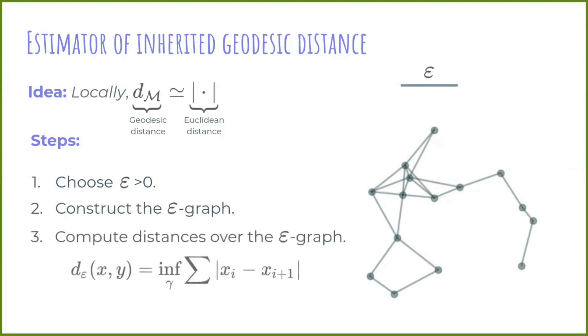Third, compute distances of the epsilon graph in the following way. Given two points x and y in the sample, compute all possible paths in the graph between these two points, and then measure the length of each path as the sum of the Euclidean distance of consecutive points. Finally, pick the shortest path.